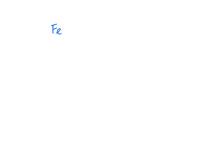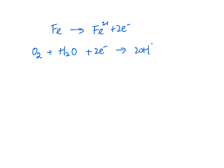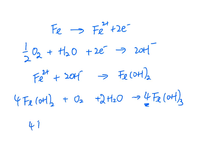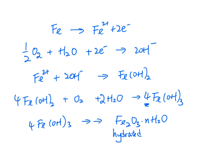To recap: first, iron loses two electrons; then the electrons are absorbed by the water and oxygen; they become hydroxide; the hydroxide and Fe2+ combine to form iron(II) hydroxide; and iron(II) hydroxide combines with water and oxygen to form iron(III) hydroxide. Remember to use the coefficient 4 for balancing.